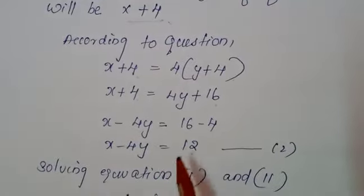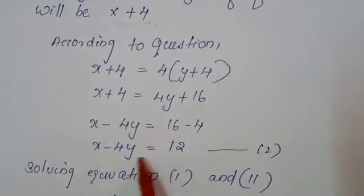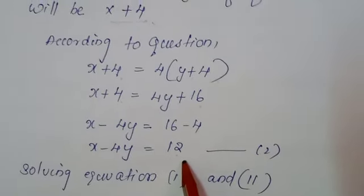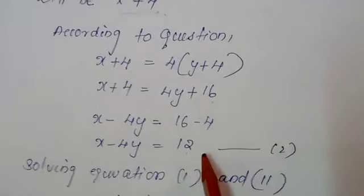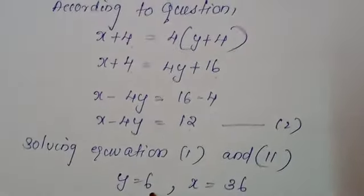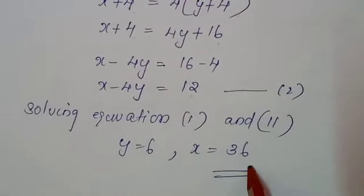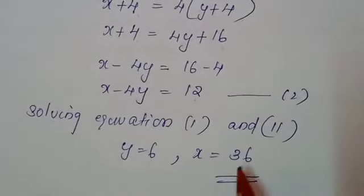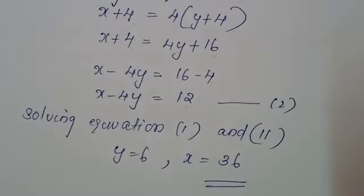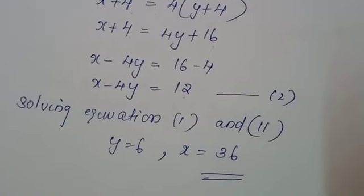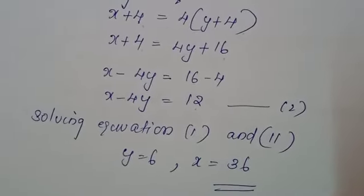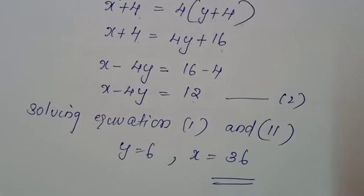So, first one is X is equal to 6Y and the second equation is X minus 4Y equals 12. So, while solving these 2 equations, you will get the answer Y equals 6 and X equals 36. So, in this way, we are doing the age problems. Age problems surely come for the exams. So, practice well, study well, revise all the questions. Okay, thank you.